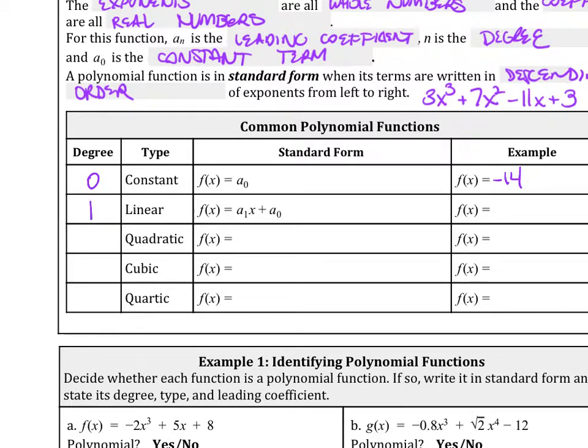Then we have a linear equation, we have a sub 1x plus a sub 0. An example of this is 5x minus 7, so a linear equation. We think of y equals mx plus b.